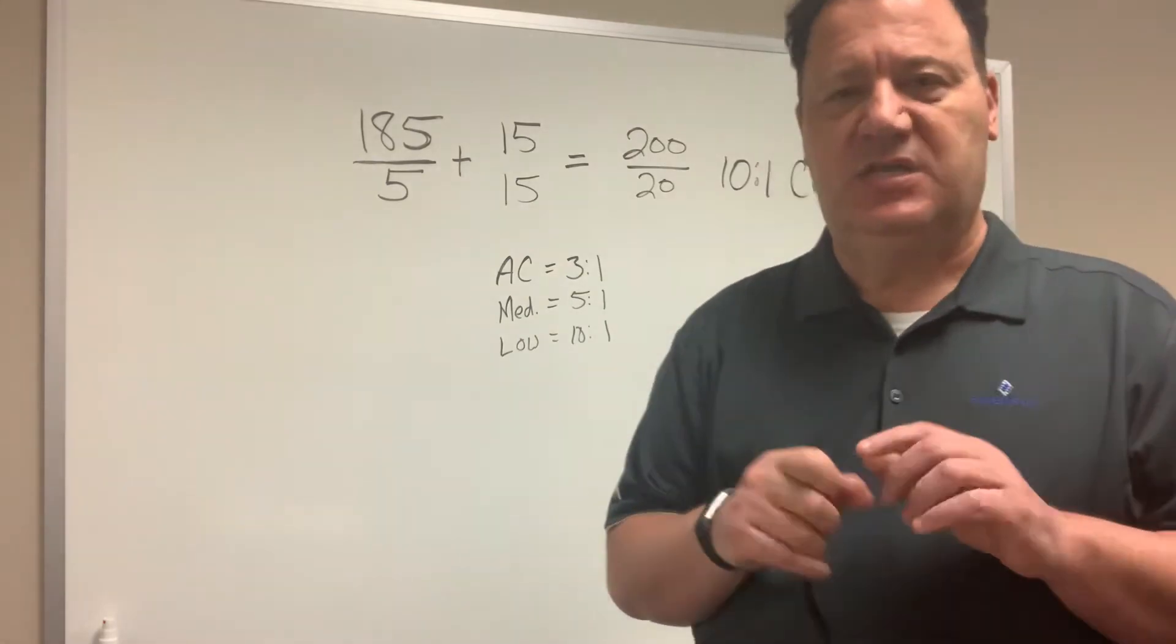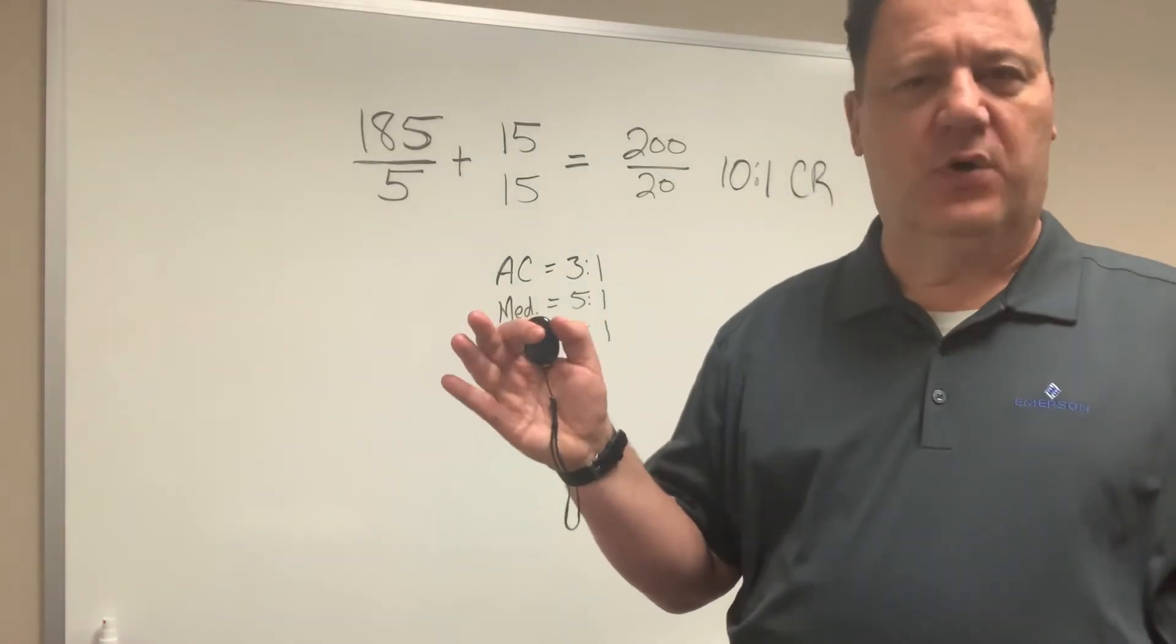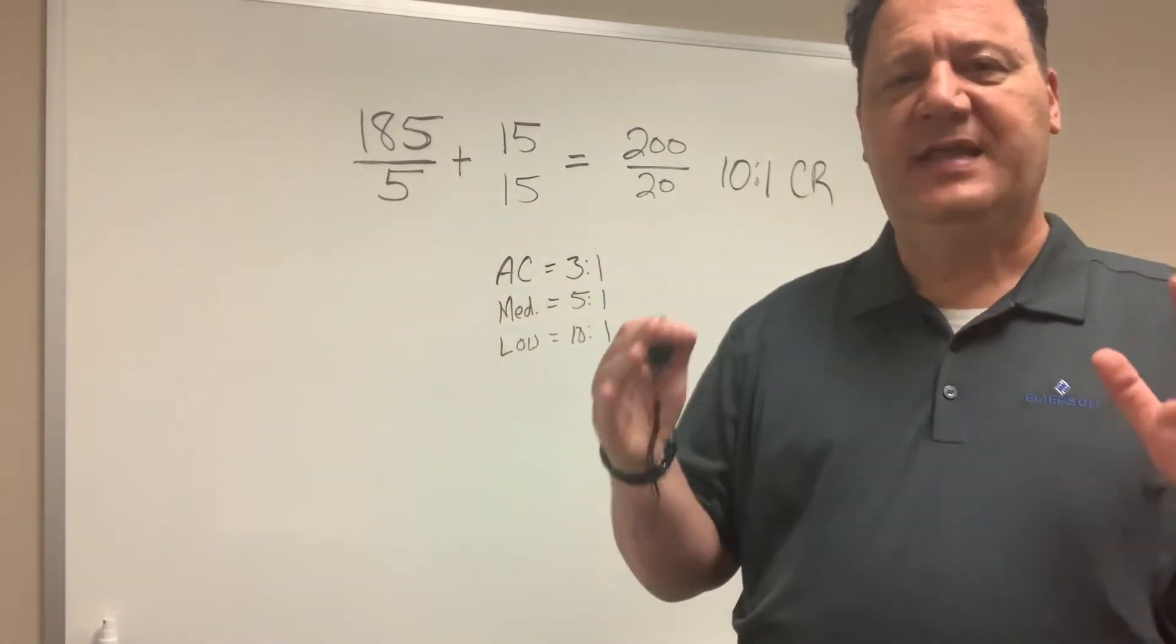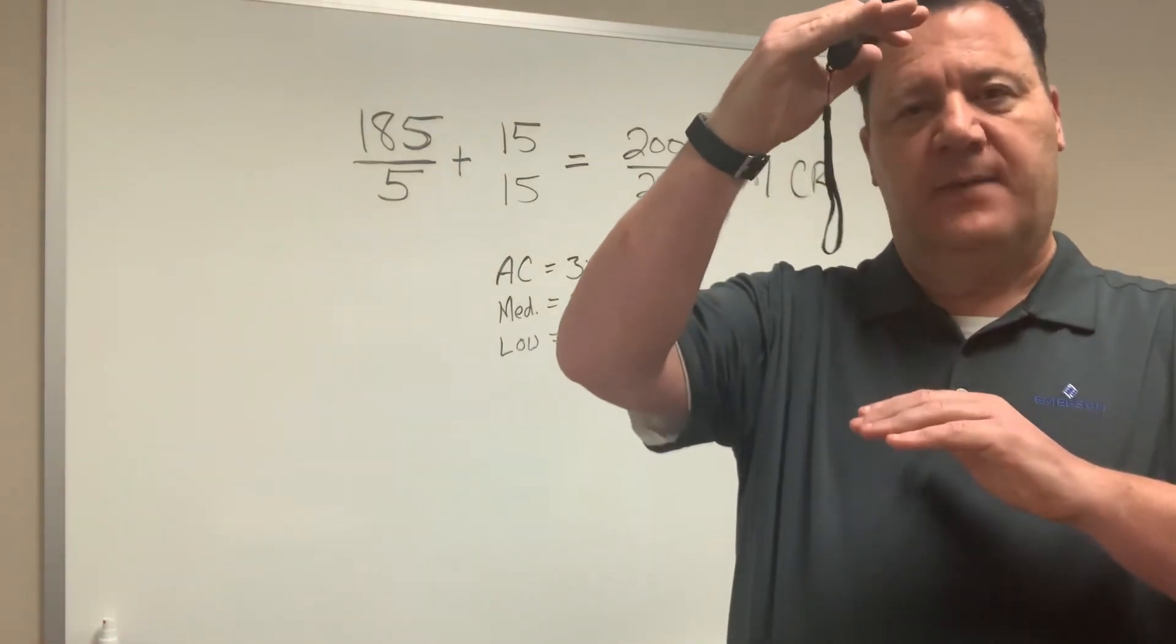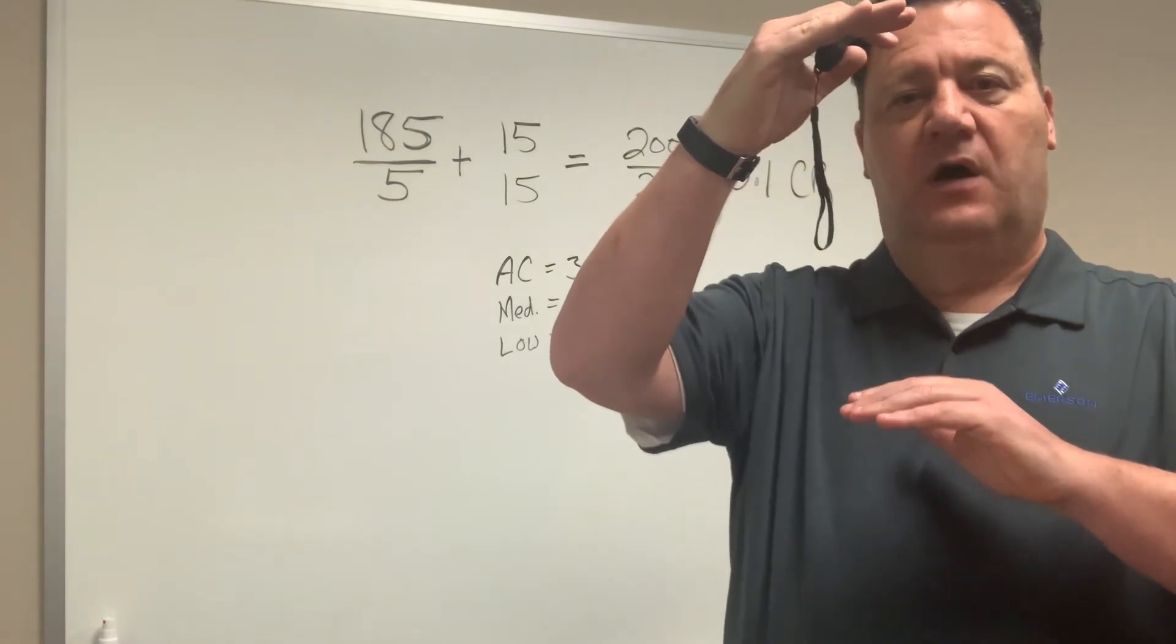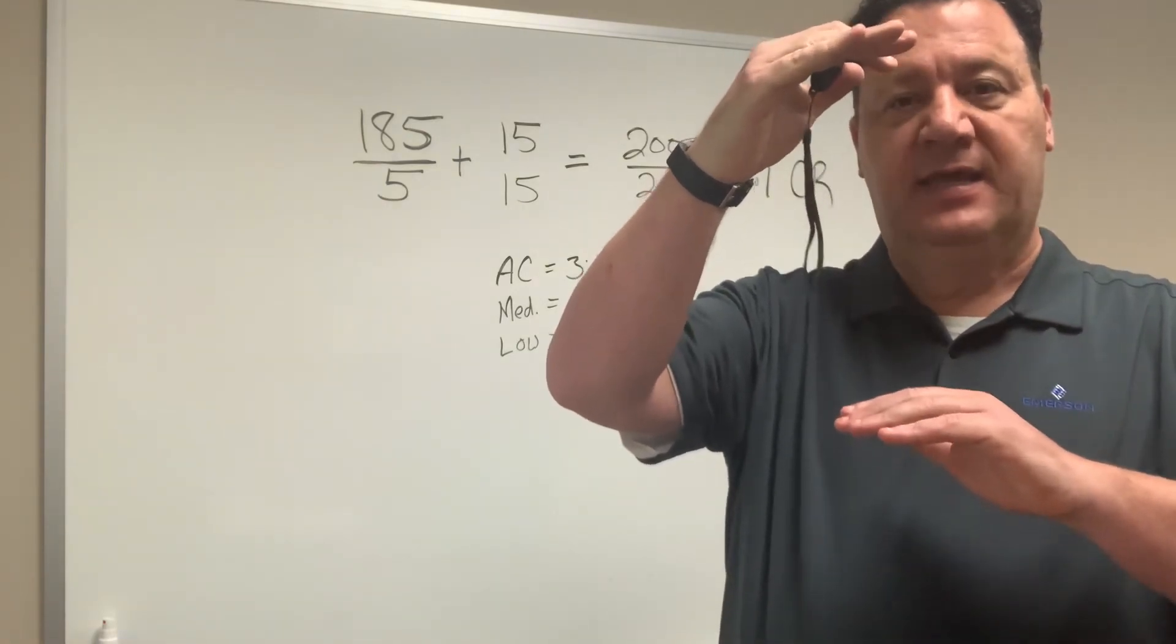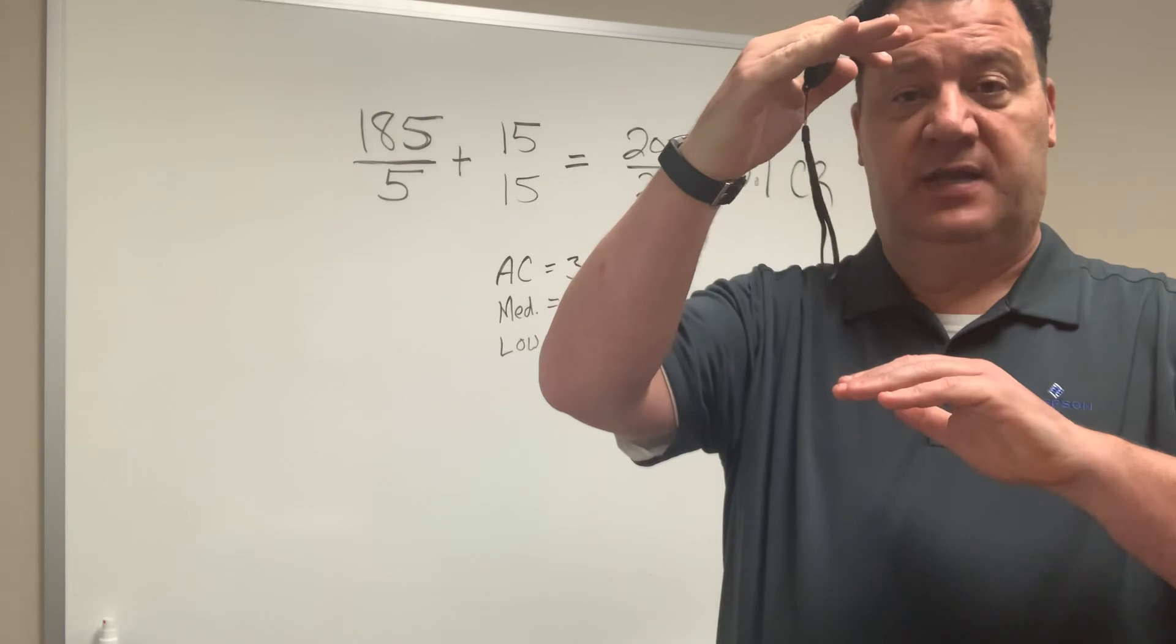Now these aren't sketched in stone. Air conditioning could be 4 to 1, be 5 to 1. What is this really telling you about the compressor? Well remember, the farther those numbers get apart, the harder that compressor is running and the hotter that compressor is running.